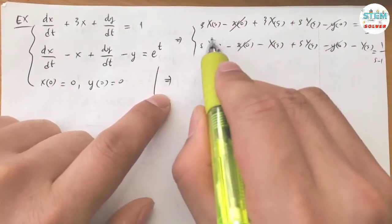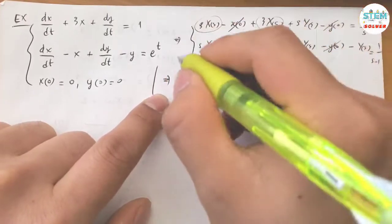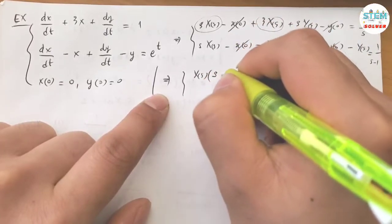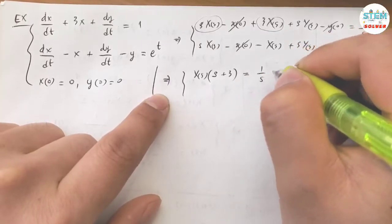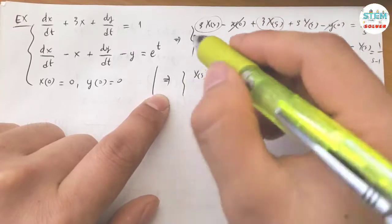Simplify this a little bit. So this and this factor capital X(S) out. I have S plus 3 equals 1 over S minus S capital Y(S). This one.